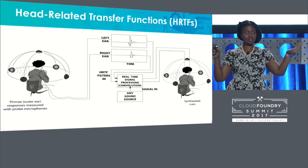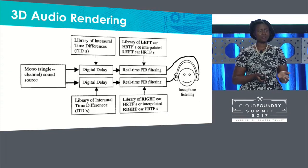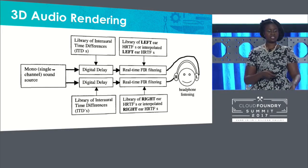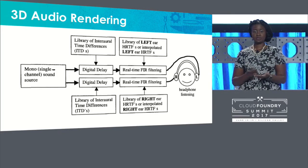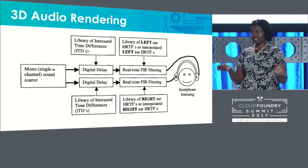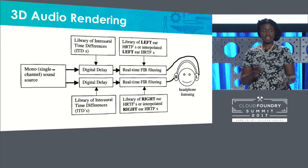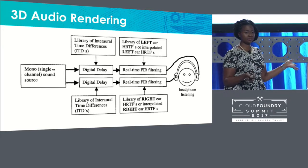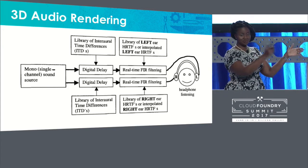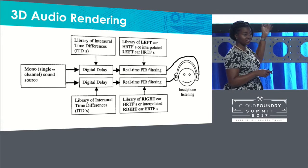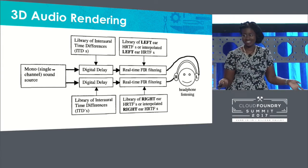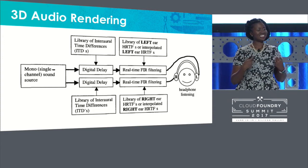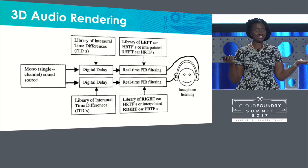We can take any sound source and convolve it with that impulse response, and then it sounds like the sound is coming from anywhere in space around you. We have a bunch of different head-related transfer functions for all different locations in space. So it allows us to use sound, treat it as a signal, and manipulate it using DSP, or digital signal processing, to emulate how sound actually travels in space. We can take a mono or single-channel sound source, split it in two — one for the left ear, one for the right ear — impose a delay on the farther side, and filter it. Don't worry, this is not on the test. And so when a person hears it over headphones, it actually sounds like it's coming from a location in space.